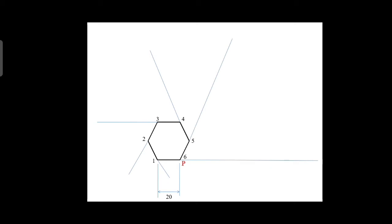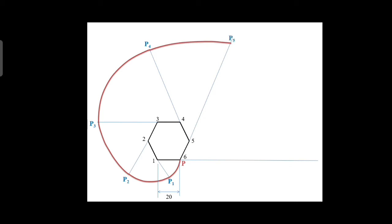With 1 as center and 1P as radius (20 mm), draw an arc from P up to the extension line of 1 — that point is P1. Then 2 as center and 2P1 as radius, draw the arc from P1 up to the extension line of 2 — get P2. Then 3 as center and 3P2 as radius, draw the arc up to the extension line of 3 — get P3. Next 4 as center and 4P3 as radius, draw the arc from P3 up to the extension line of 4 — that point is P4. Then 5 as center and 5P4 as radius, draw the arc from P4 up to the extension line of 5 — get P5. Finally, 6 as center and 6P5 as radius, draw an arc up to the extension line of 6 — get P6.